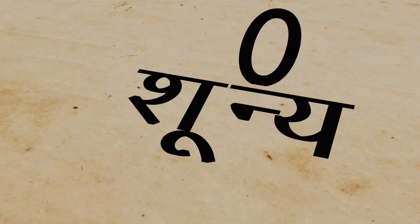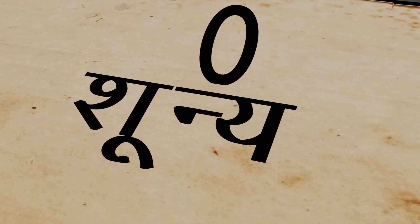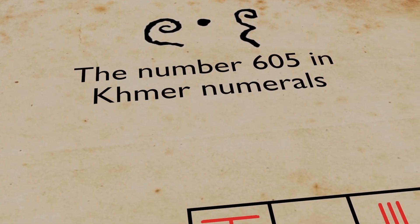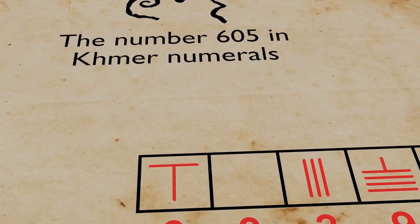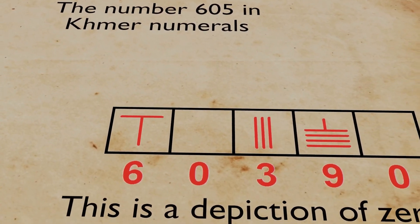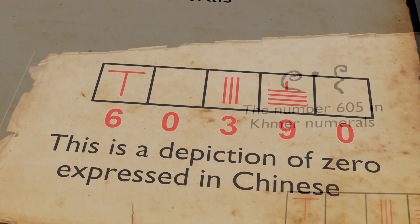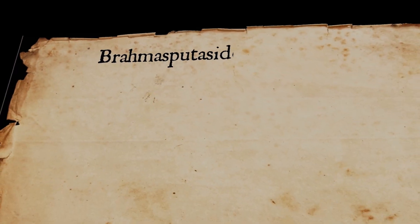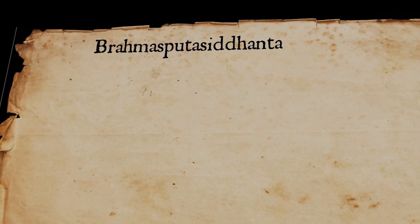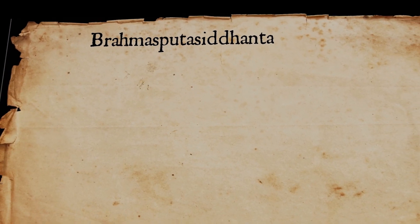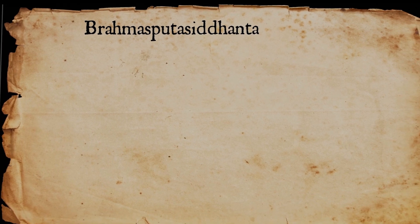A century later, Brahmagupta introduced the symbol for 0 and called it Sunya. For the first time in history, he treated 0 as a number, while in Babylonian or Roman mathematics, 0 was denoted only as a dot or an empty placeholder. He also gave rules for mathematical operations in his book named Brahmasphutasiddhanta.